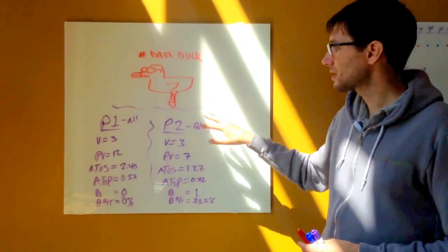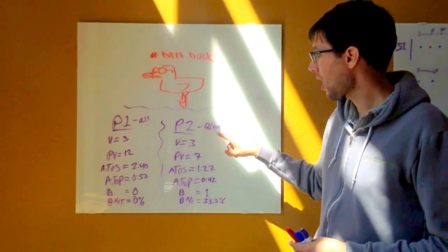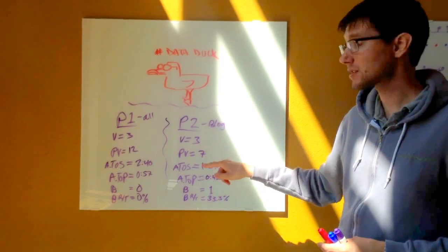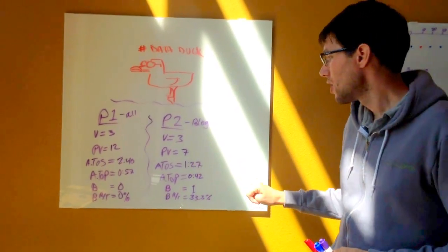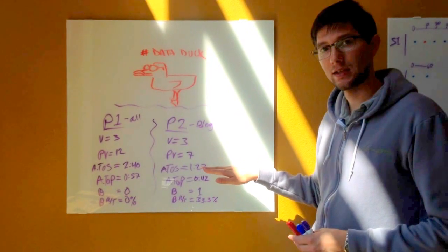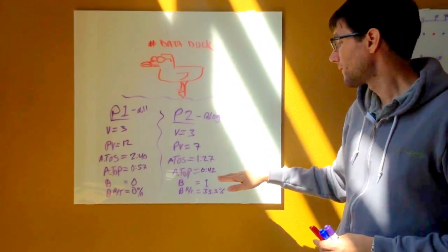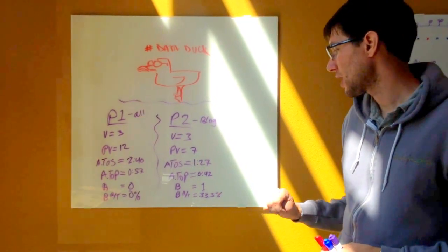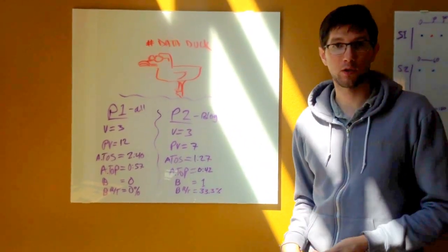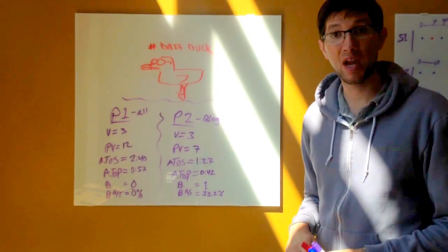Now here, our second profile is filtered down, blog only. We still see three visits, we see only seven page views, we see 27 seconds for our average time on site, 42 seconds for our average time on page, one bounce, and a bounce rate of 33% because one of our three visits bounced.